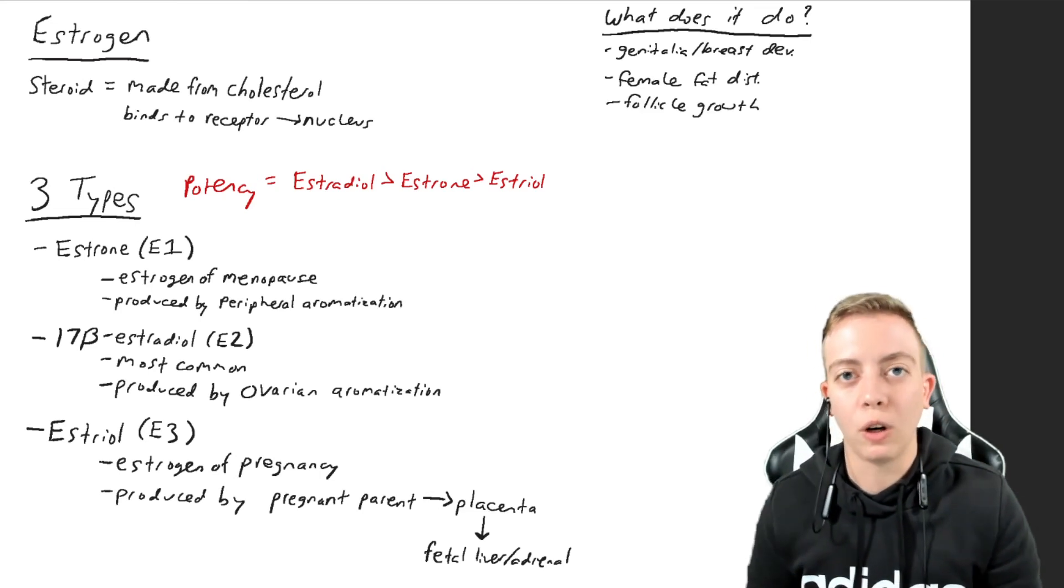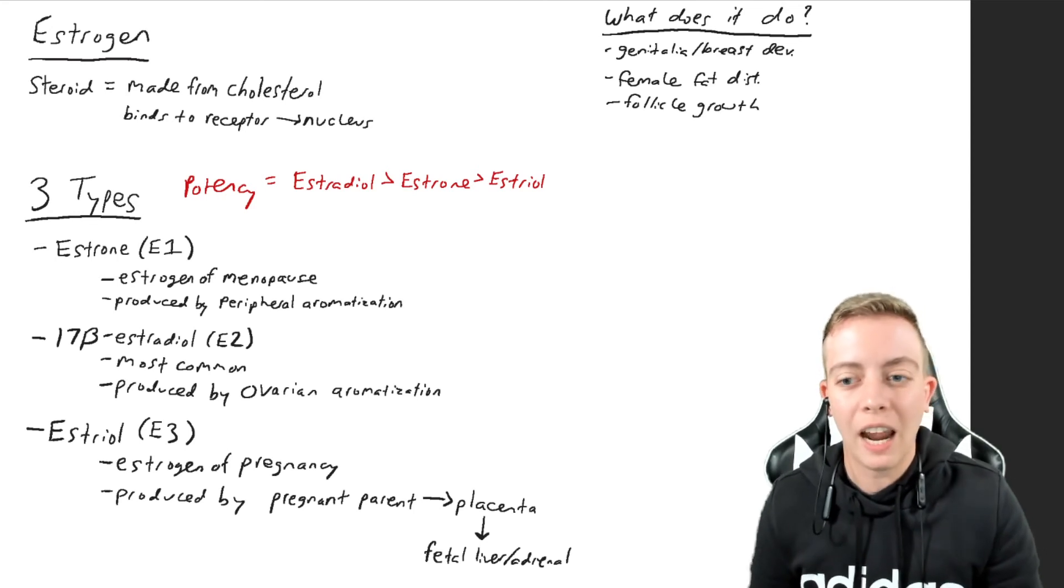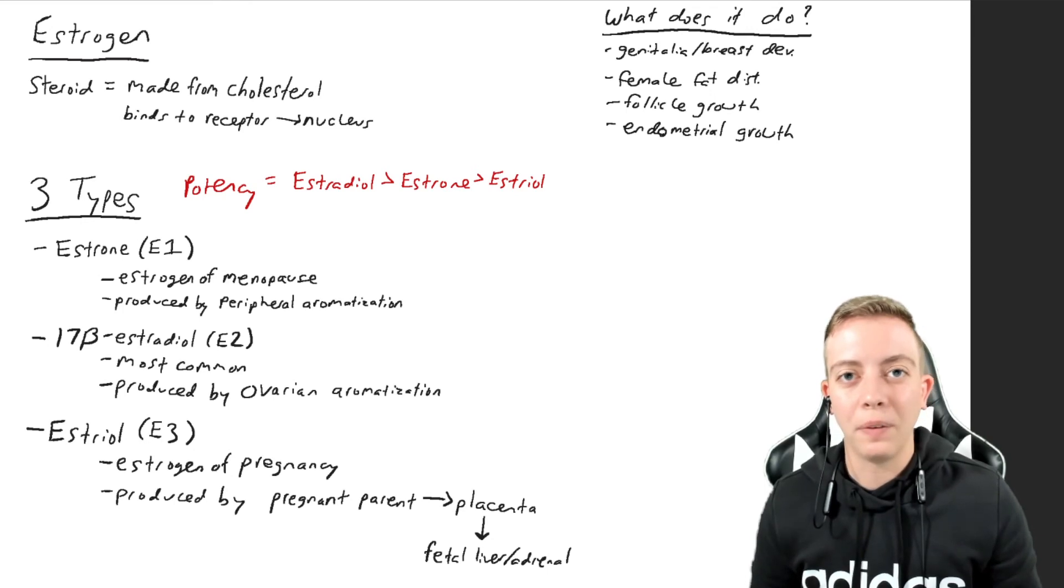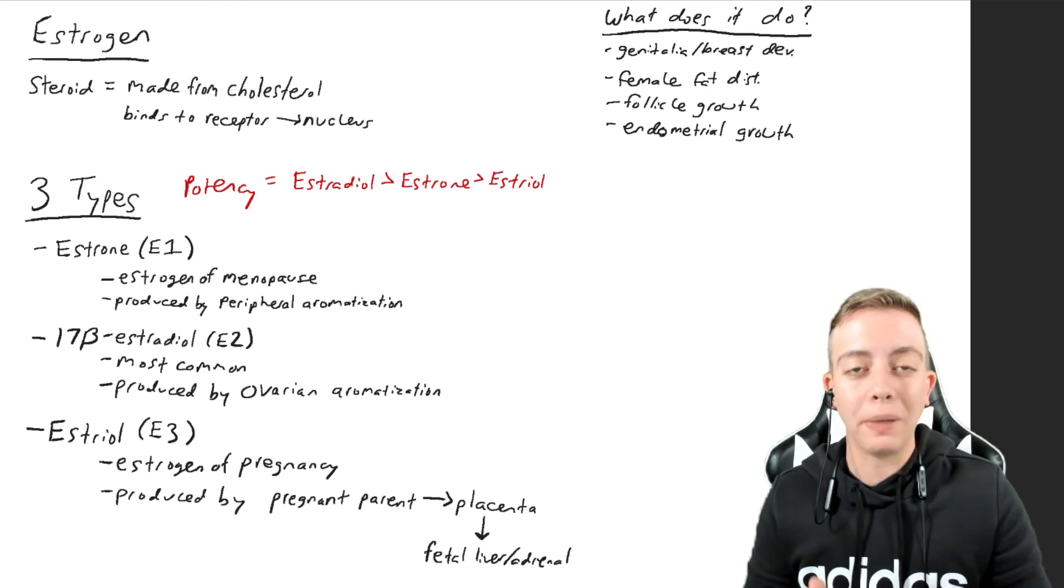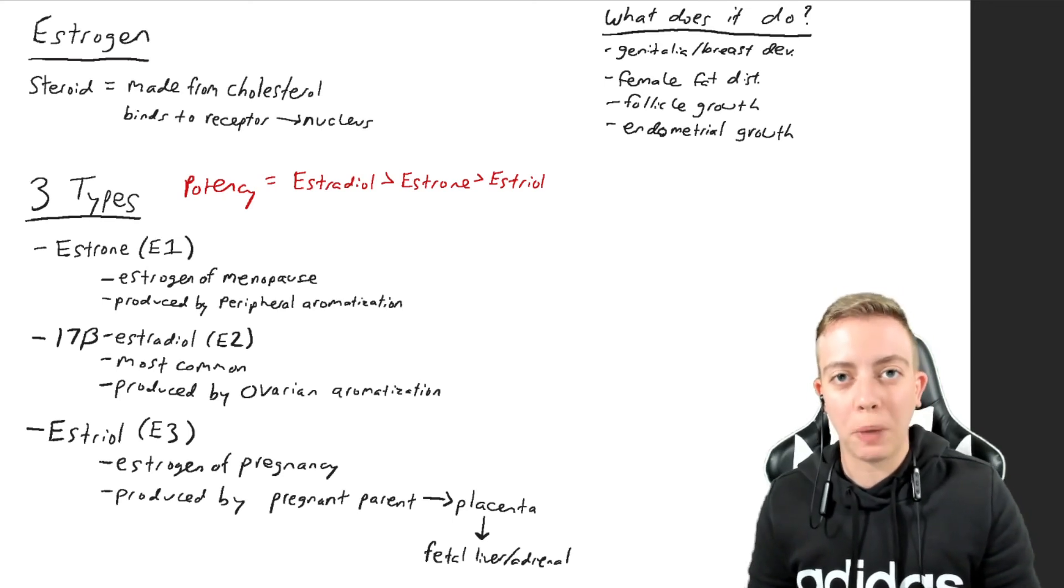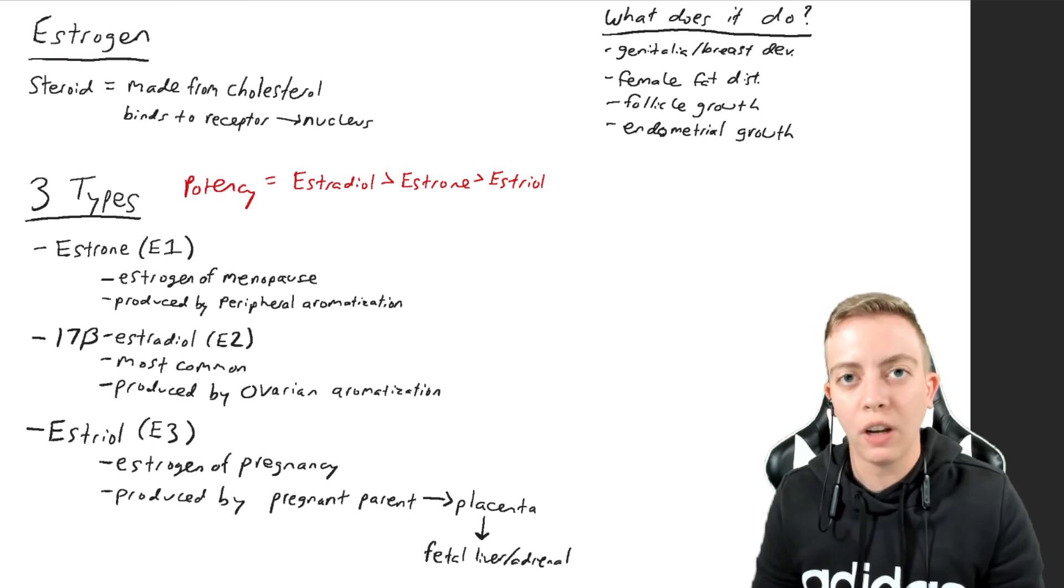Estrogen also regulates follicle growth, and I don't mean hair follicles, I mean ovarian follicles. This is what leads to pregnancy and contributes a lot to the menstrual cycle. It also stimulates endometrial growth. In the menstrual cycle, your period is marked by a shedding of the endometrium, which is the innermost lining of the uterus. Estrogen is responsible for throughout the cycle maintaining this endometrial growth, causing this lining to grow so it can be shed off during menses.